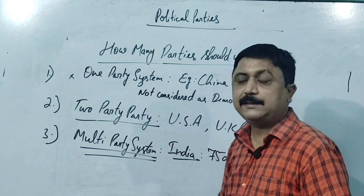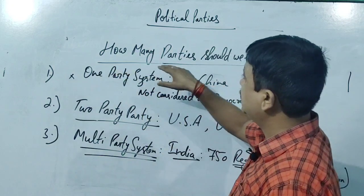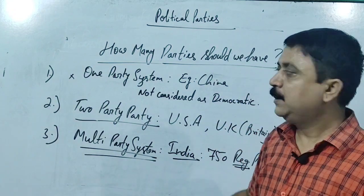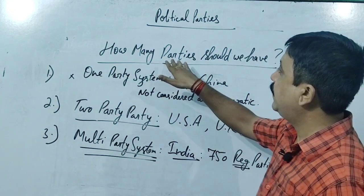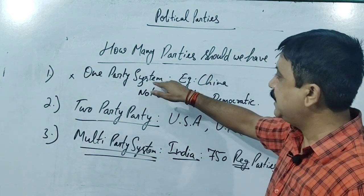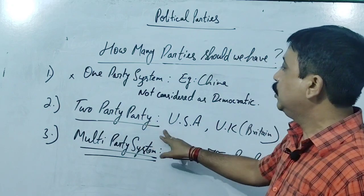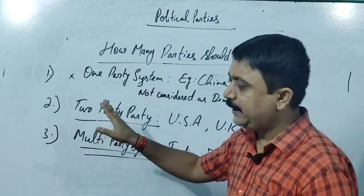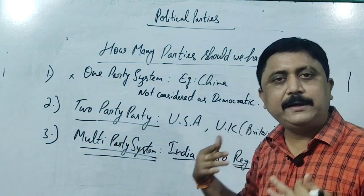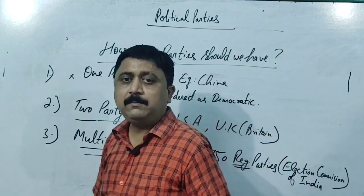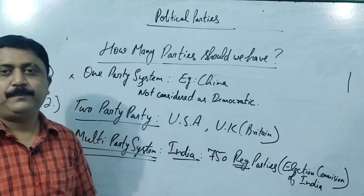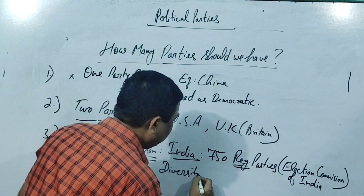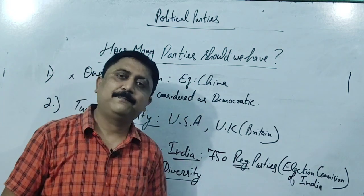So to answer our topic - how many parties should we have - we will not advocate for the one-party system. We have seen the conditions: China has one-party, countries like England and America have two-party system. The third system is multi-party, which is what India follows. Coming to the answer: we need more than one party to run a democratic system.